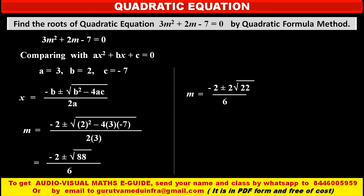By factorizing 88, we get m is equal to minus 2 plus or minus 2 under square root 22, upon 6. Now we can divide the numerator and denominator both by the common factor 2. So we get the first value of m is equal to minus 1 plus root 22 upon 3, and the second value of m is equal to minus 1 minus root 22 upon 3. So like this we get two values — that means two roots of this quadratic equation — and each one contains an irrational term.